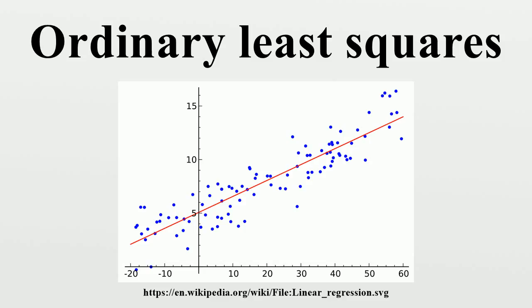Simple regression model. If the data matrix X contains only two variables, a constant and a scalar regressor, then this is called the simple regression model. This case is often considered in beginner statistics classes, as it provides much simpler formulas even suitable for manual calculation.